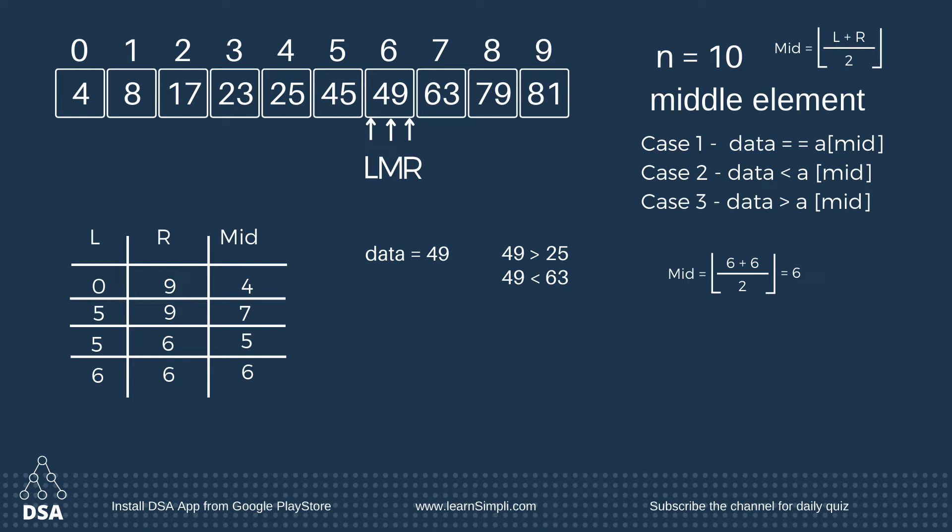Now the middle value is 6. Checking the cases: data is equal to a[mid] — we found the data! So here we stop and return the mid value, which means returning the index value 6.